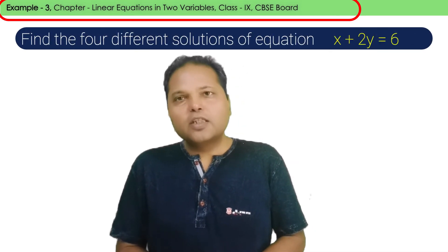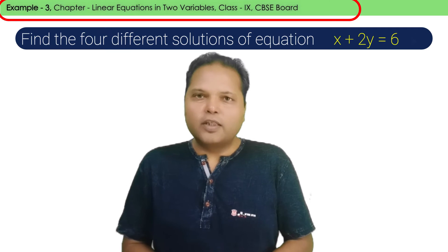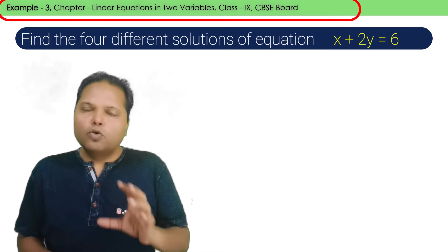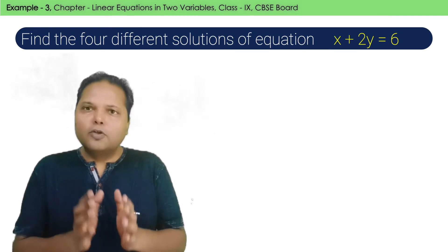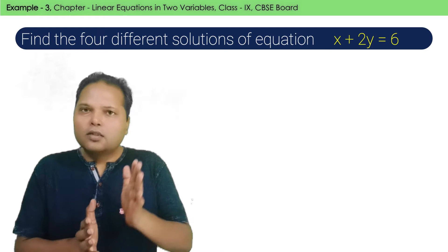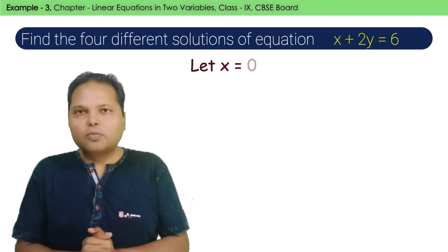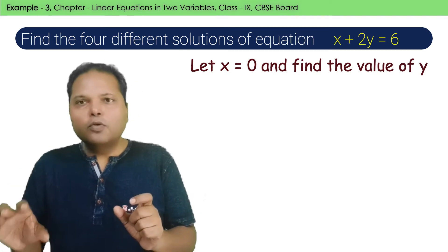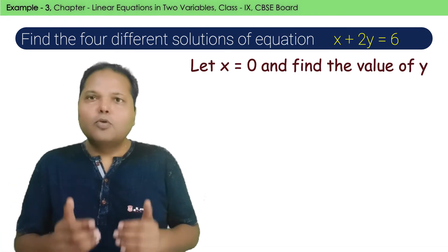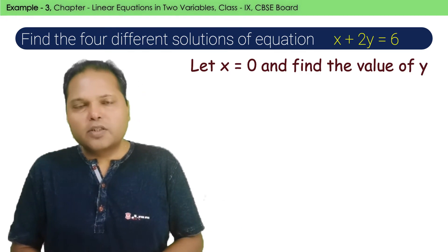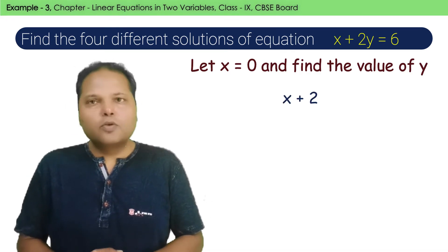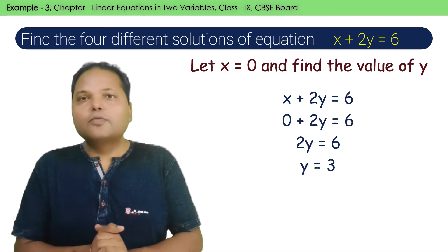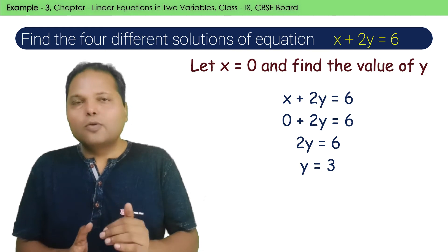We have said that we have to find 4 possible solutions of this equation. Here we have two variables: x and y. In both variables, we assume the value of one variable. Suppose we assume the value of x — then we identify the corresponding value of y. So let's put the value of x into the equation, and we will see that y is equal to 3. So one of the solutions of this particular equation is 0,3.